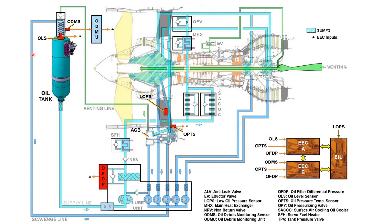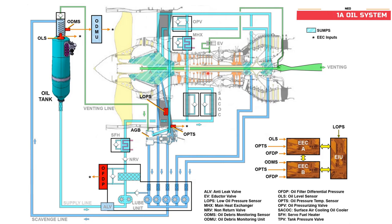There is also an oil ventilation system. The bearing chambers are ventilated via the center vent body. Air separated after the debris monitoring sensor also goes to the accessory gearbox and is vented through the center vent body. An important component here is the inductor valve, which takes 10th stage compressor air and dumps it into the center vent body.